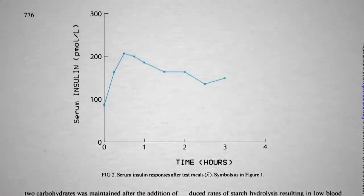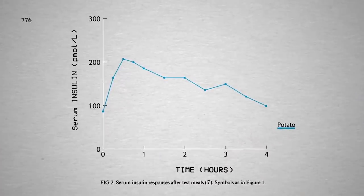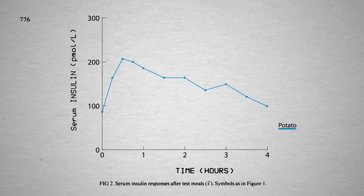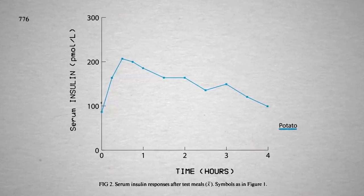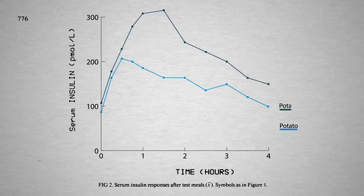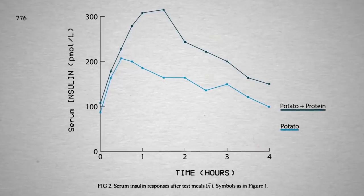Here's the insulin spike if you feed people mashed white potatoes. Then what would happen if you added some tuna fish? You get twice the insulin spike.